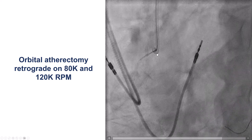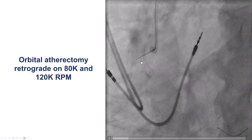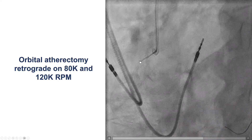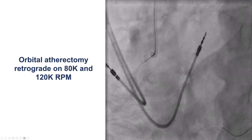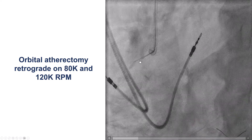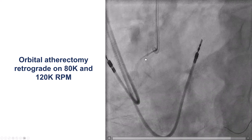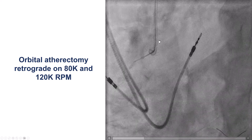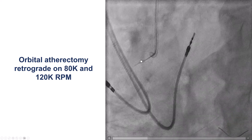The way we performed orbital atherectomy in this case was by going backwards. We used the glide assist to go forward inside the right coronary artery, and then came back at 80,000 RPM. Because this is a large vessel, we also went to high speed at 120,000 RPM, which is something we do very rarely. We could have also used rotational atherectomy here. With orbital atherectomy, it is better to do this backward treatment rather than forward treatment, which can cause dissections due to the large radius of spinning of the crown.